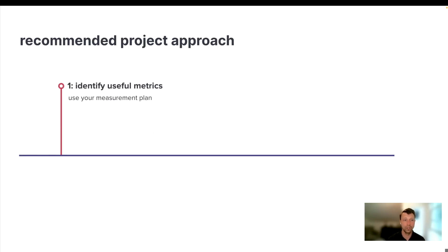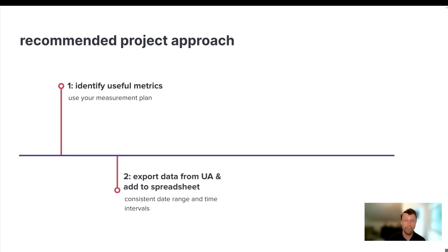So what does this project look like in terms of the steps? Number one, identify the metrics that are useful for you. Use that measurement plan — if you don't have one, consider going through the process with your team of actually building one. We do have six months before that data gets erased, so there's a little bit of time to get that measurement plan in place. Number two, after you've identified what metrics you want to take out of Universal Analytics, go into Universal Analytics, find the report that has that metric, export that data, and bring it into Google Sheets.